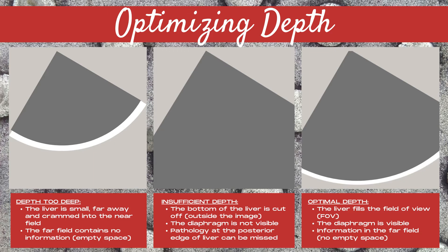In the middle image, there's insufficient depth. The bottom part of the liver is cut off — it's outside of the image. The diaphragm of the liver at the posterior margin of the liver is not visible, and this means that pathology at the posterior edge of the liver can be missed.